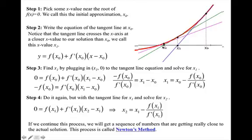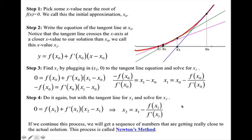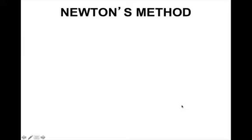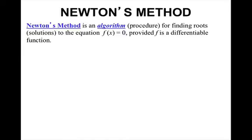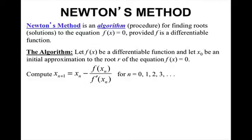So Newton's method is an algorithm or procedure for finding roots or solutions to the equation f(x) = 0, provided f is a differentiable function. The algorithm is: let f(x) be a differentiable function and let x₀ be an initial approximation to the root r of the equation f(x) = 0. Then we can compute x_{n+1} = x_n - f(x_n)/f'(x_n) for n = 0, 1, 2, 3, and so on.